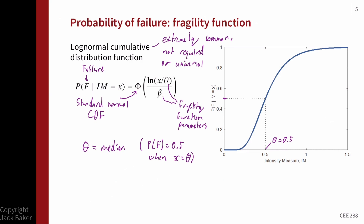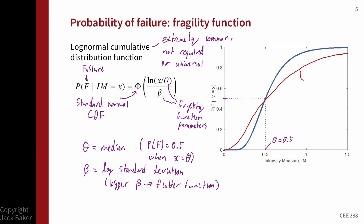Beta is the log standard deviation — the standard deviation for the normal distribution. Since x is in log units, it's the standard deviation of the log of the underlying random variable. A bigger beta gives a flatter function: the x value at which the fragility function equals 0.5 is unchanged, but the changes in probabilities above and below theta are slower as beta gets bigger.